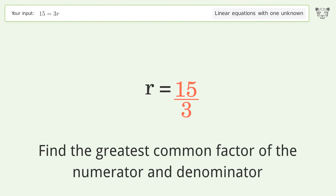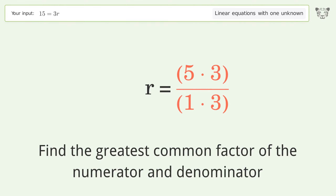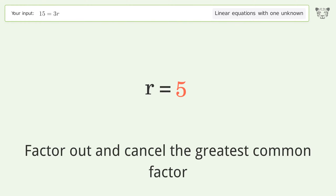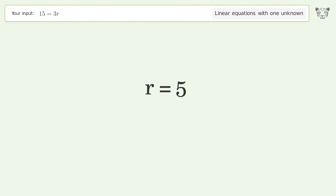Find the greatest common factor of the numerator and denominator, then factor out and cancel the greatest common factor. And so the final result is r equals five.